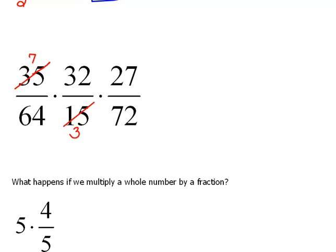Now, we have to look and see what else we can do. And I notice again that 3 and 27 have a 3 in common. 3 will go into 3 one time, and 3 will go into 27 nine times.